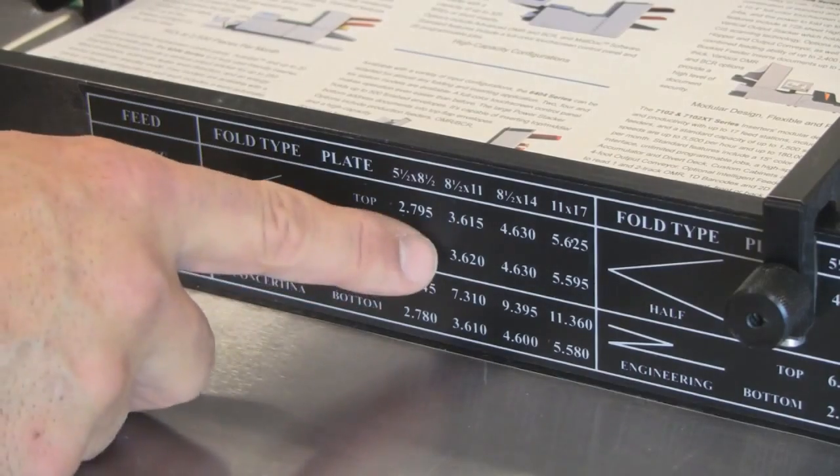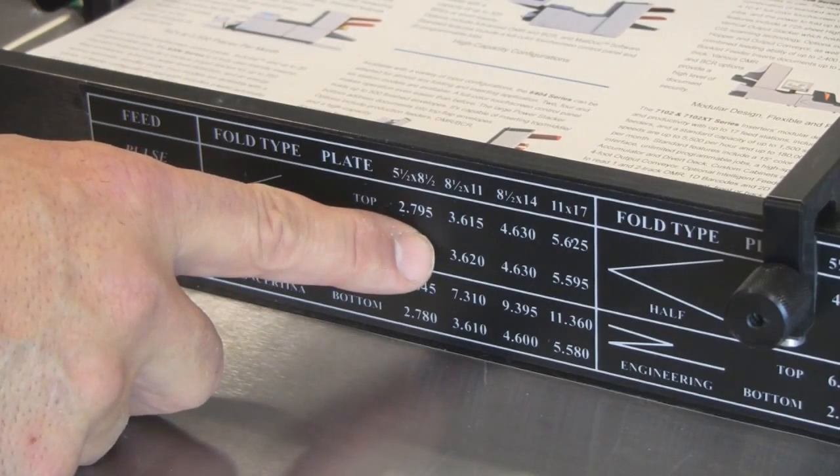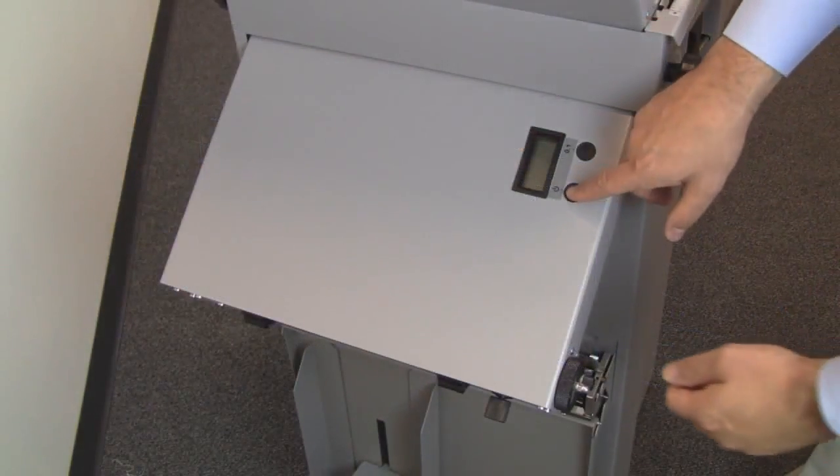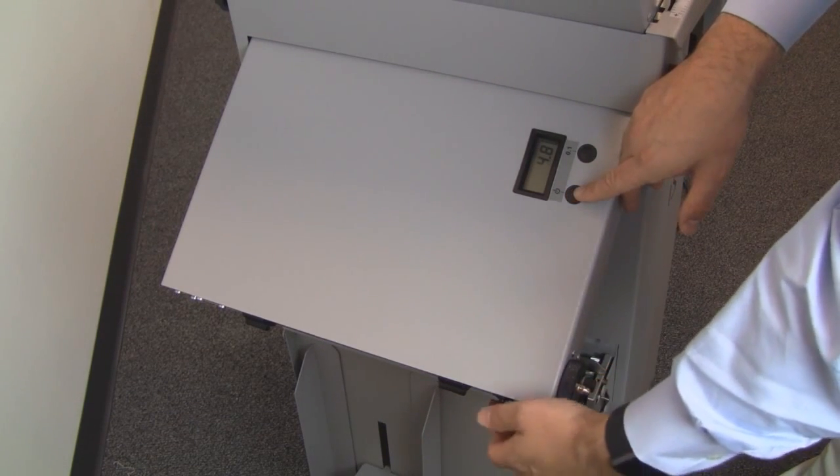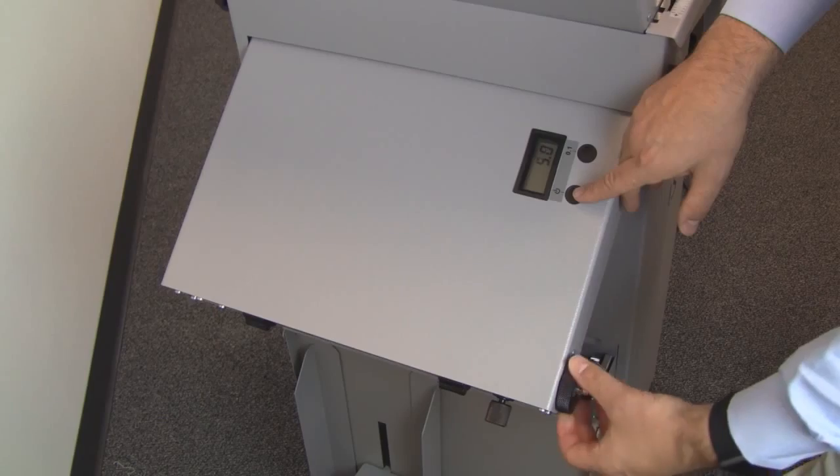Now look at the lower fold plate setting on the chart. It reads 3.620. The same steps are used to set the lower fold plate. With the fold plate set, you are ready to start folding.